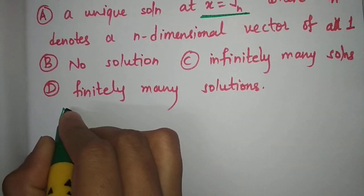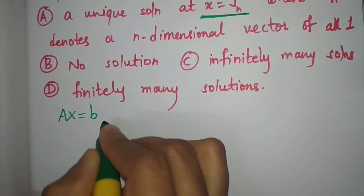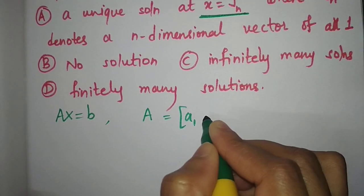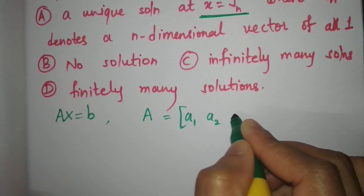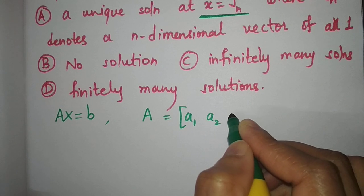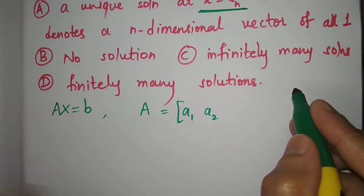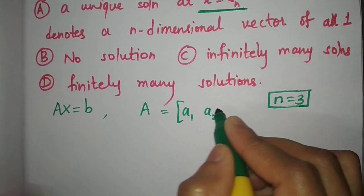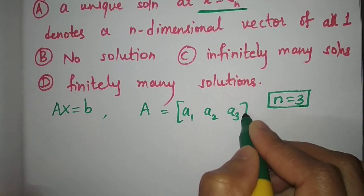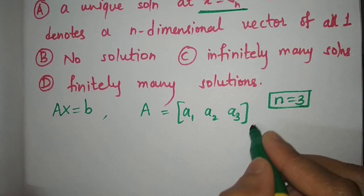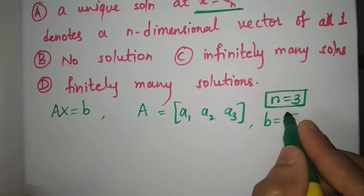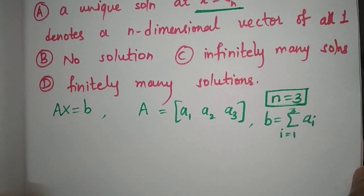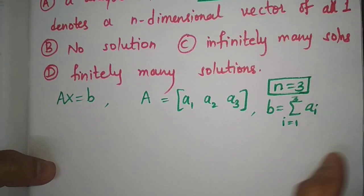Now, Ax = b where A is just [a1, a2, ..., an]. For our understanding, I will take n = 3. So A will be just [a1, a2, a3], and b will be the summation of ai's for i running from 1 to 3.